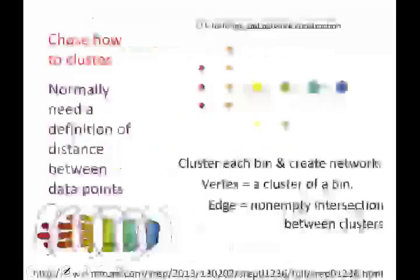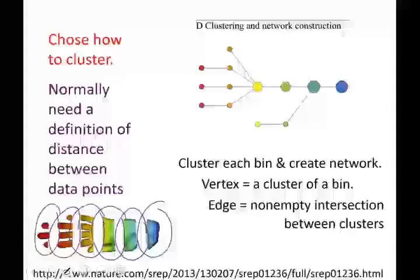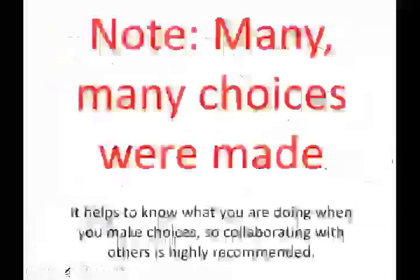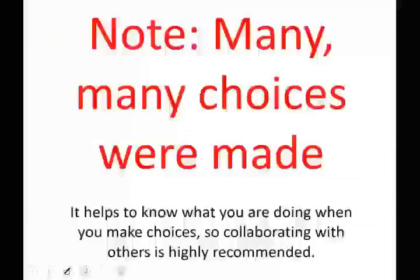Once we have our clusters, we have our vertices; we have our overlapping bins, so we also have our edges, and we now have our network — the graph representing our data. But we did make lots and lots of choices.